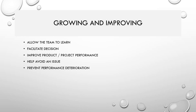The final function of the measurement domain is growing and improving. Your metric system should allow the team to learn and progress. Metrics should improve product and project performance, not degrade it — they should help avoid issues and prevent performance deterioration. Leading indicators prevent problems; lagging indicators improve performance. Forecasts facilitate informed decision making. This is how different types of metrics support team growth and improvement.